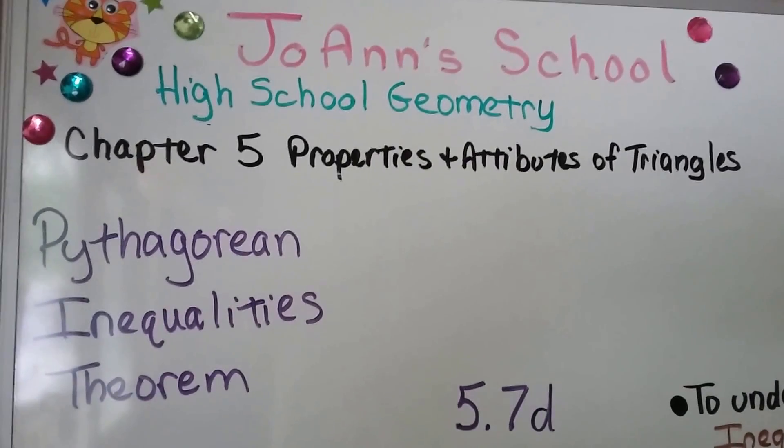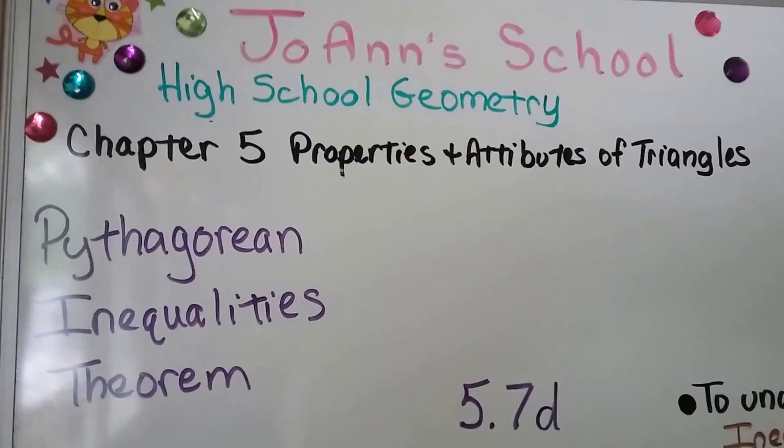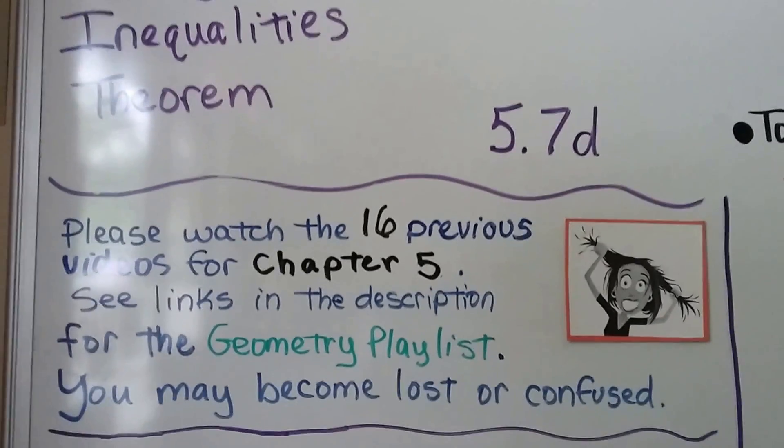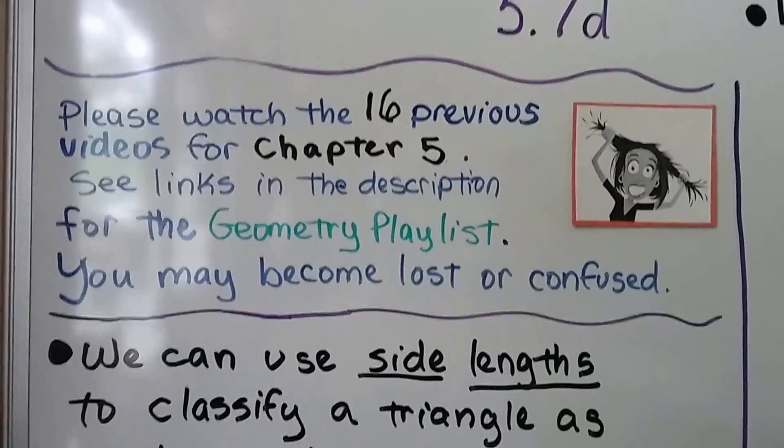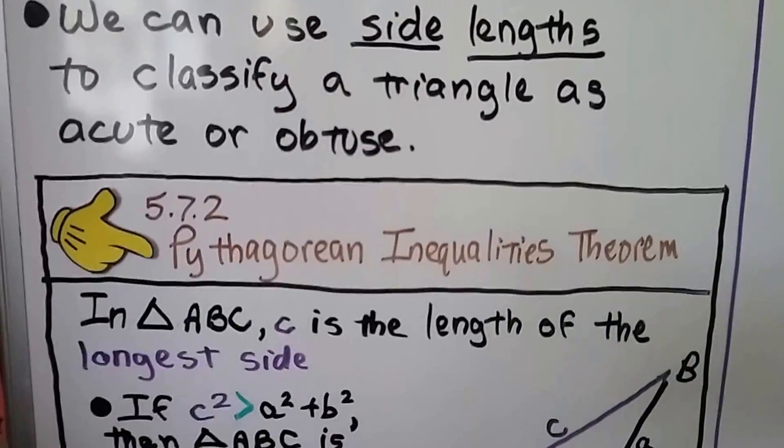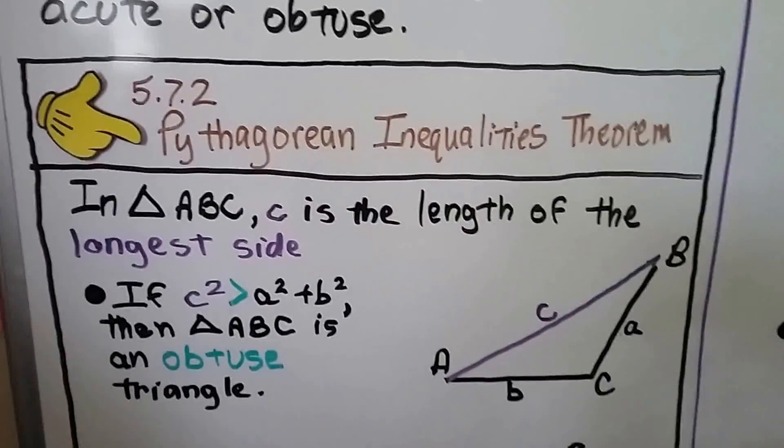The Pythagorean Inequalities Theorem. This is our last lesson for 5.7. We're at 5.7d, which means there's 16 total videos for chapter 5 in the geometry playlist. We can use side lengths to classify a triangle as acute or obtuse.